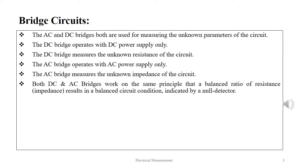The DC and AC bridges are both used for measuring the unknown parameters of the circuit. The DC bridge operates with DC power supply only and measures unknown resistance of the circuit. The AC bridge operates with AC power supply only and measures the unknown impedance of the circuit.